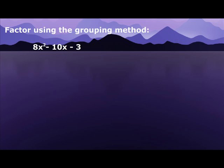Factor using the grouping method. The first thing I do is I look at my a, which is 8, and my c, which is negative 3. And I multiply them together. So 8 times negative 3 is negative 24.